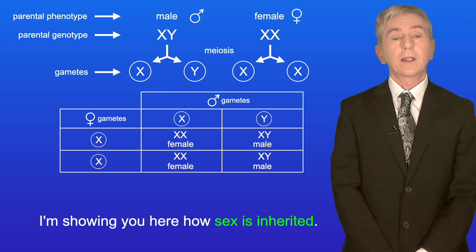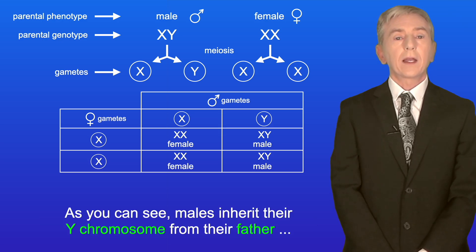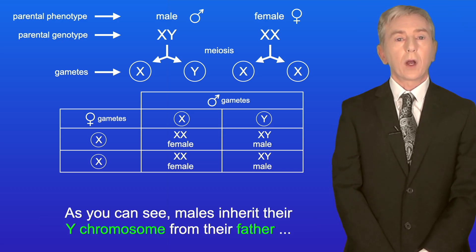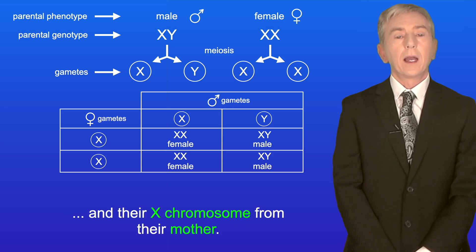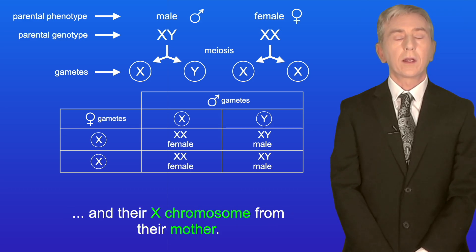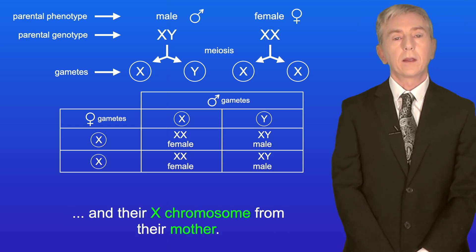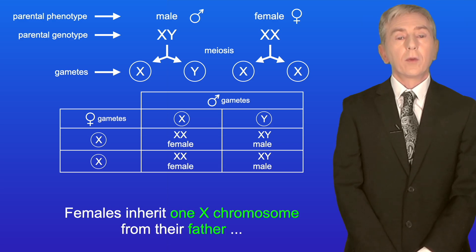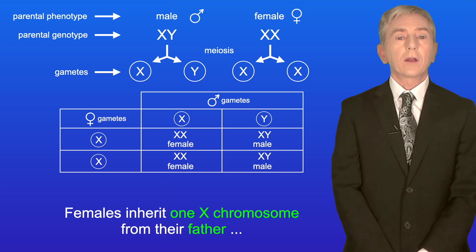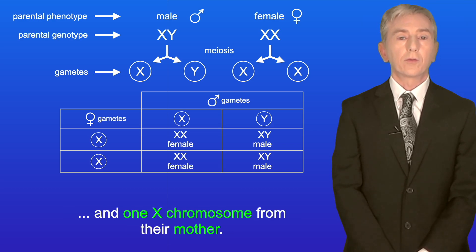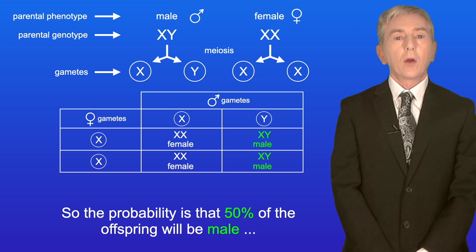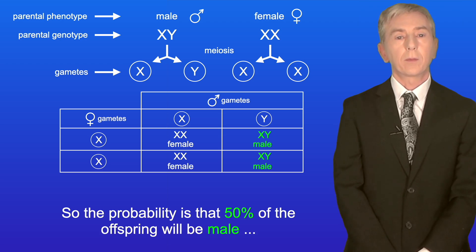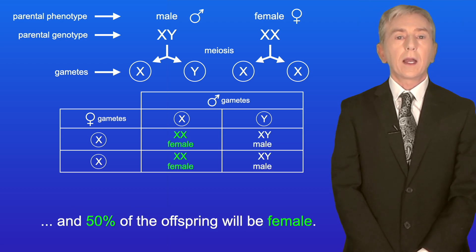I'm showing you here how sex is inherited. Males inherit their Y chromosome from their father and their X chromosome from their mother. Females inherit one X chromosome from their father and one X chromosome from their mother. So the probability is that 50% of the offspring will be male and 50% of the offspring will be female.